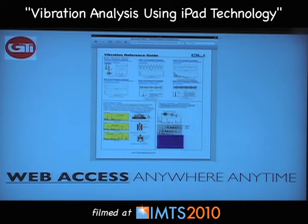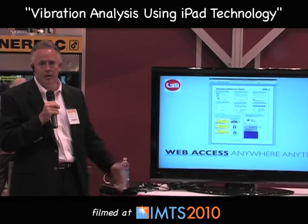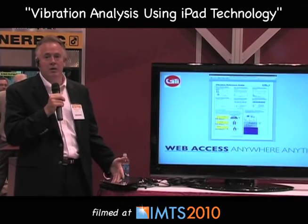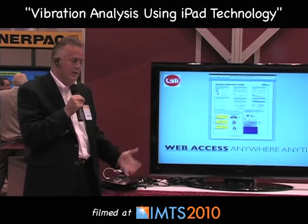Since we're web-connected, if we're on the floor taking a reading and see something strange — or we're not as well trained as we'd like to be — we can simply go to the web and access vibration reference guides and severity charts. They're all available online. Just go to Google, search for what you're looking for, and now you've got it on the same device you're taking your measurements with.